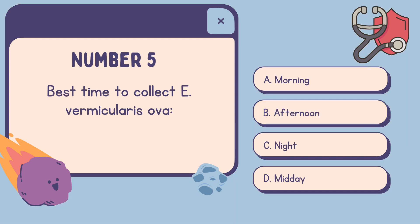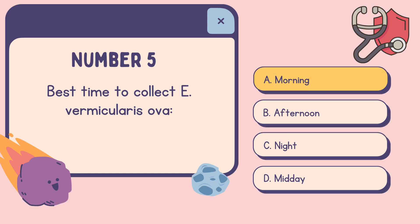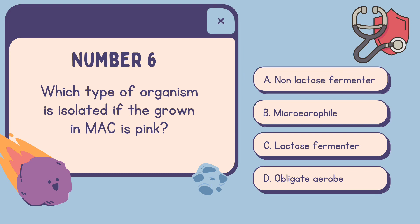Number five: Best time to collect E. vermicularis ova — A. Morning. B. Afternoon. C. Night. D. Midday. The correct answer is A. Morning.